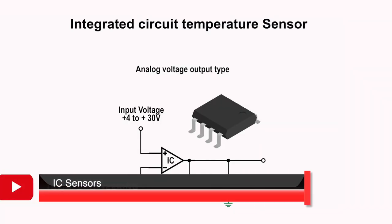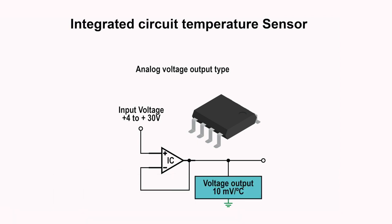Integrated circuits use a silicon chip for the sensing element. Their working principle is based on the fact that semiconductor diodes have temperature-sensitive voltage versus current characteristics.